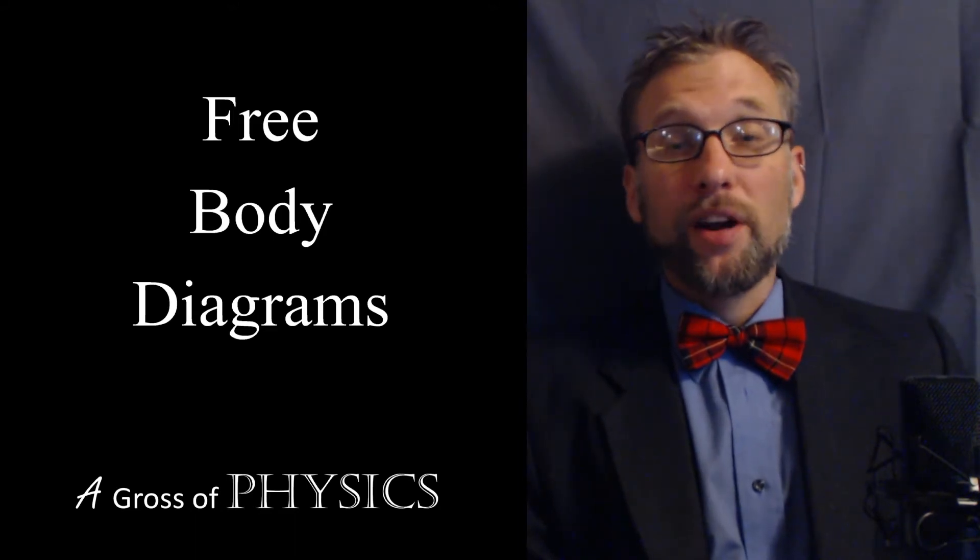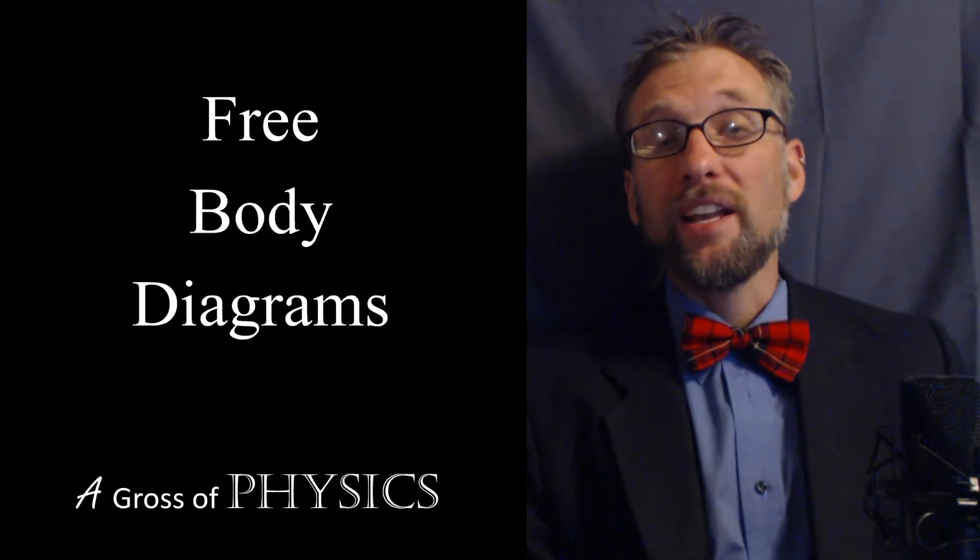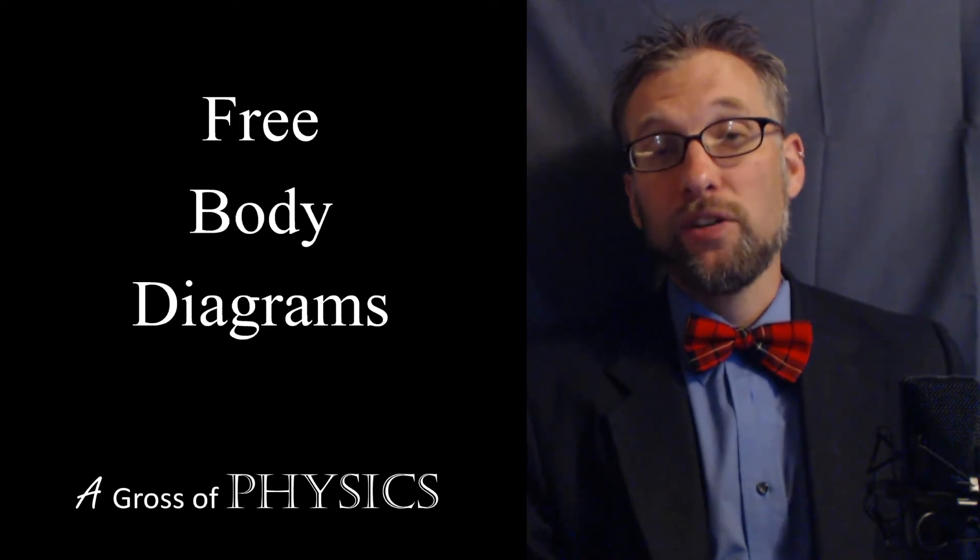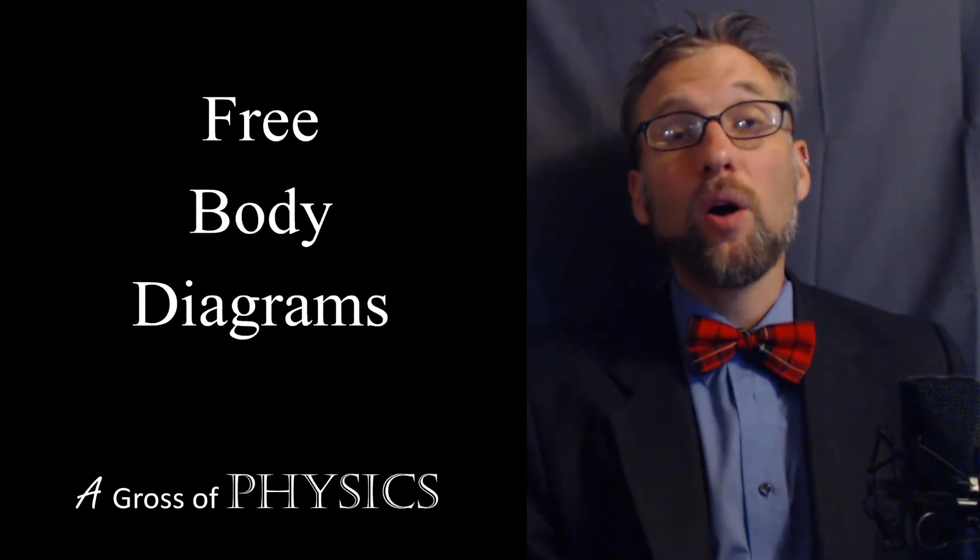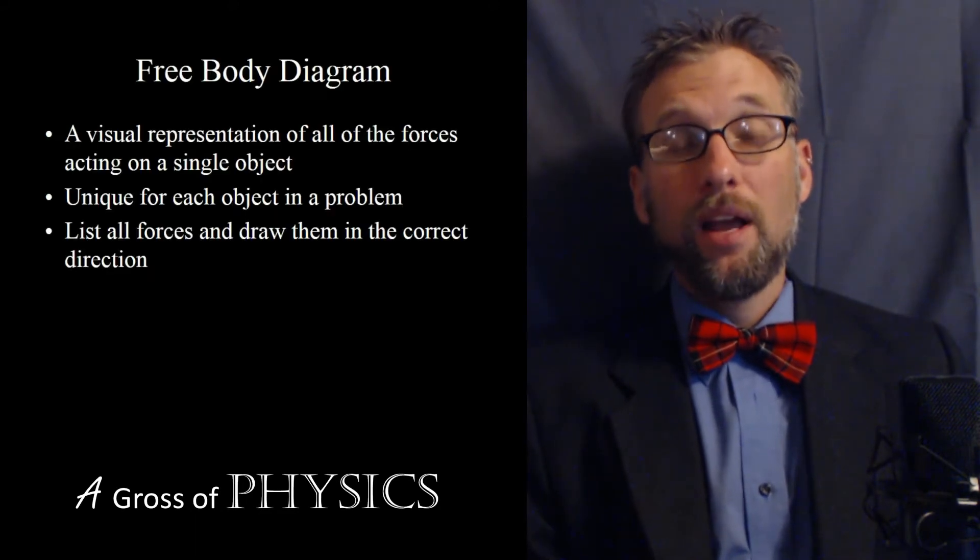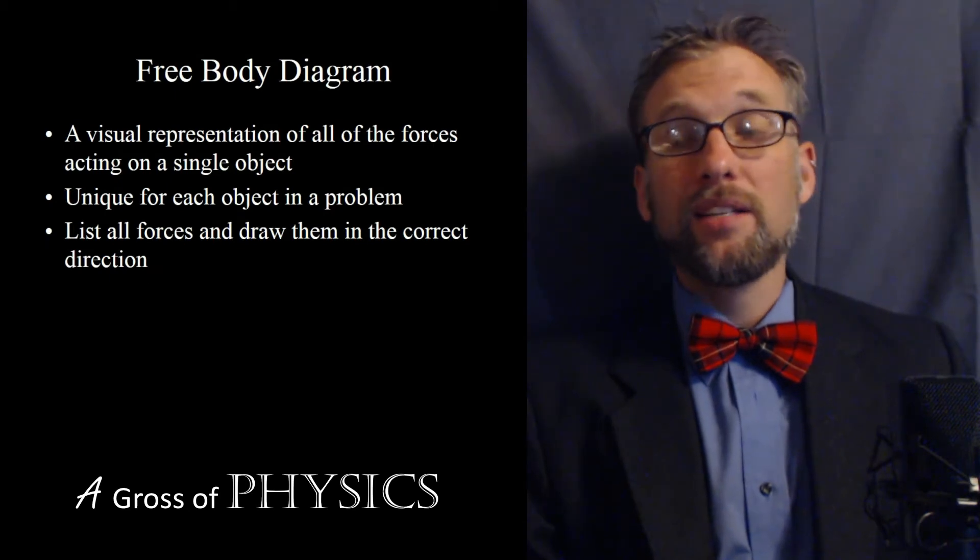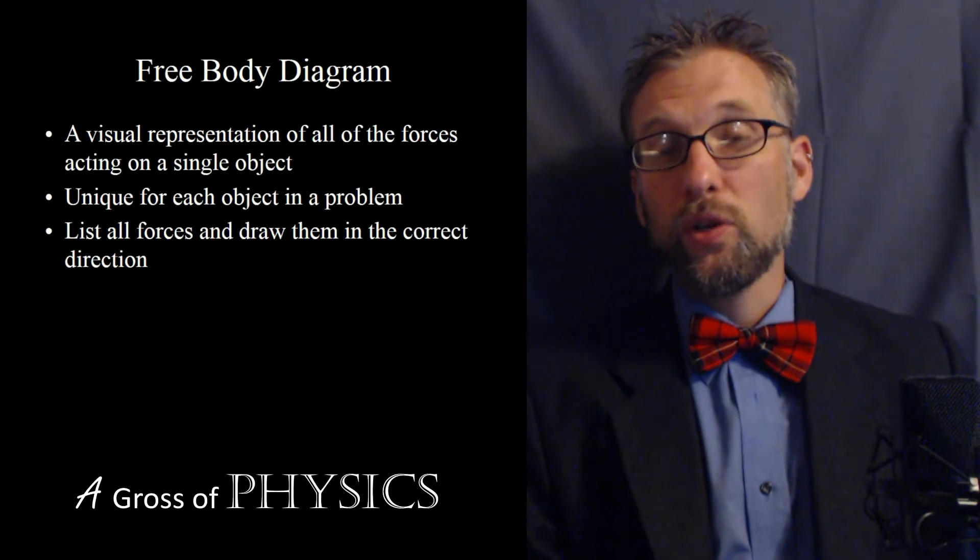Now, free body diagrams are a way for us to take a givens list and make it a visual representation. And in fact, what we're going to do is take an object and draw all the forces acting on it. Now, a free body diagram takes the object and separates it from the rest of the world. So all we do is look at a single object at a time.